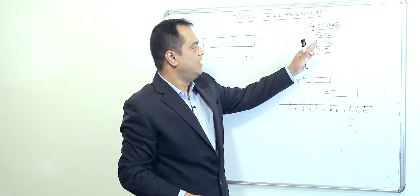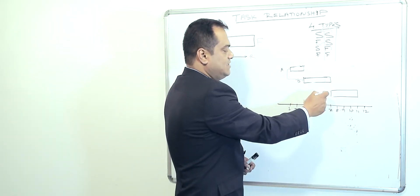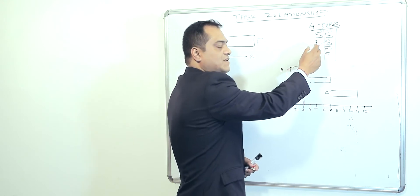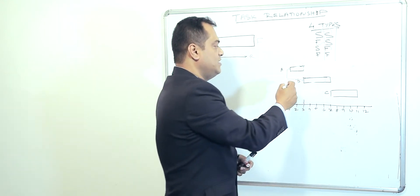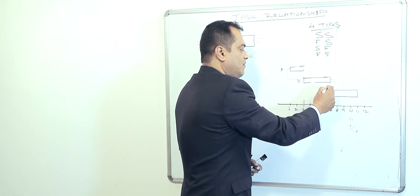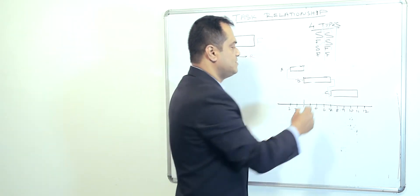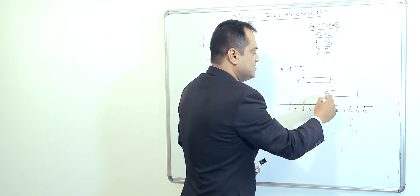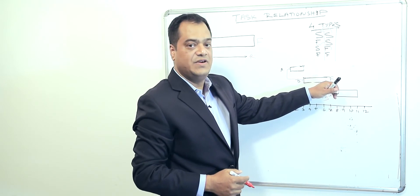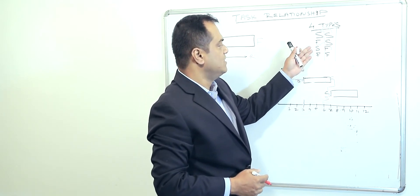Now for Finish to Start: let's say C is dependent on B and is related to B as a Finish to Start relationship. So B is related to C — it's a Finish to Start relationship, meaning C cannot start until B is finished.